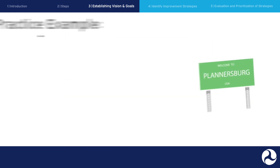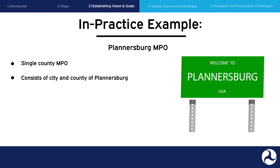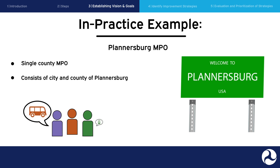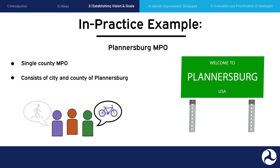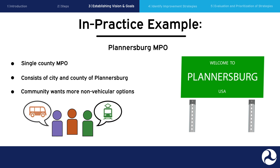For our in-practice example, let's look at the Plannersburg MPO, which is a single-county MPO consisting of the City of Plannersburg and the County of Plannersburg. The MPO is working with the City to update their vision for their transportation system. Plannersburg MPO and City staff began a public engagement process, reaching out to communities throughout their city. Through this engagement, they identify that community members desire a wider array of non-vehicular transportation options that connect all parts of the city.